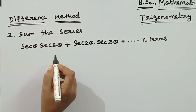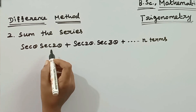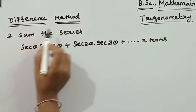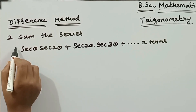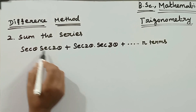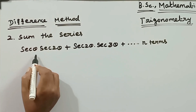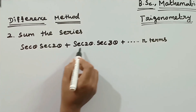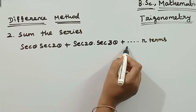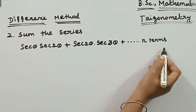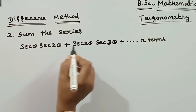Good morning students. Our topic is the summation of trigonometric series by the difference method. In this video, we will discuss the second problem: sum the series sec(θ)·sec(2θ) + sec(2θ)·sec(3θ) + ... up to n terms. We will explain this series of n terms.